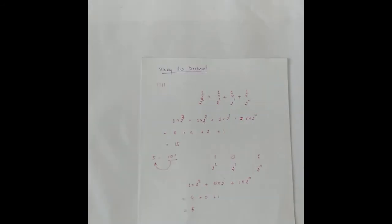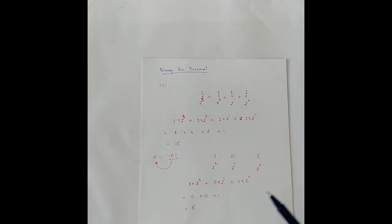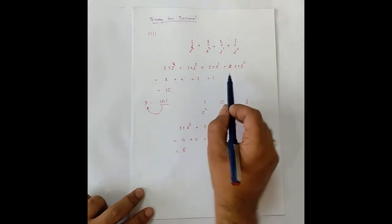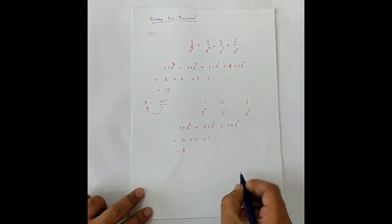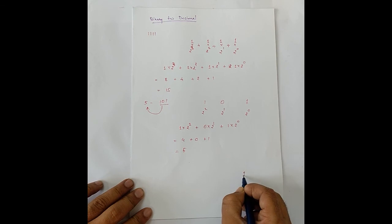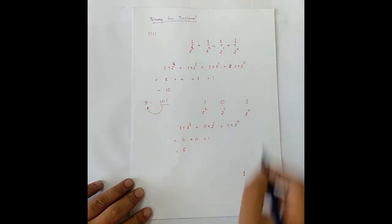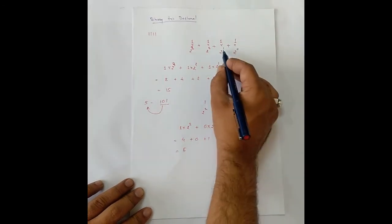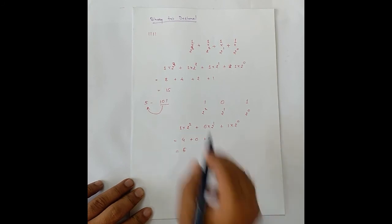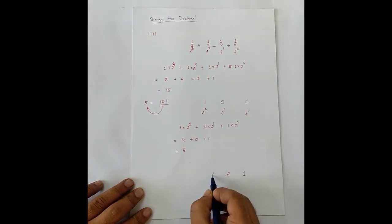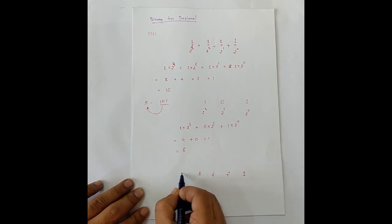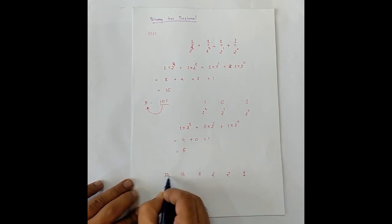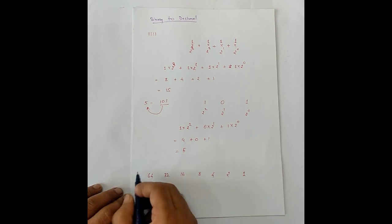In this way, any binary number can be converted to decimal using the weightage. An easy way, instead of doing all this, is we just remember this sequence starting with 1. 2 to the power 0 is 1, 2 to the power 1 is 2, 2 to the power 2 is 4. And then it keeps going in multiples of 2: 8, 16, 32, 64, 128.